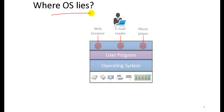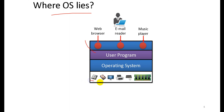Now, where does the operating system lie? At the bottom is the computer hardware. On top of the hardware sits the operating system. On top of the operating system are the user programs — for example, a web browser like Microsoft Edge or Google Chrome, an email reader, and a music player like VLC.